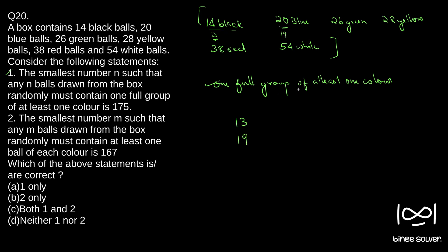So we have 13 black and 19 blue. If we got one more blue or black our criterion would be satisfied, but instead we continue picking and get 25 green balls, then 27 yellow balls, then 37 red balls, then 53 white balls. We've picked all these balls and still don't have one full group of any color.